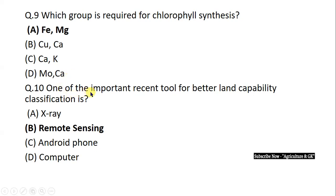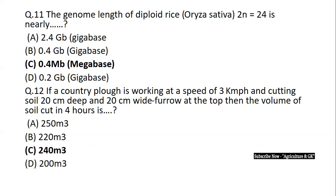One of the important recent tools for better land capability classification is remote sensing. Remote sensing is used for land capability classification, which is divided into eight classes. Class one to class four are important from agriculture point of view. The genome length of diploid rice Oryza sativa is nearly 0.4 megabase pair.